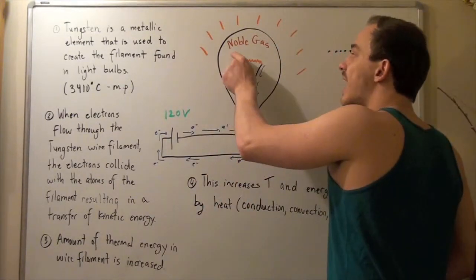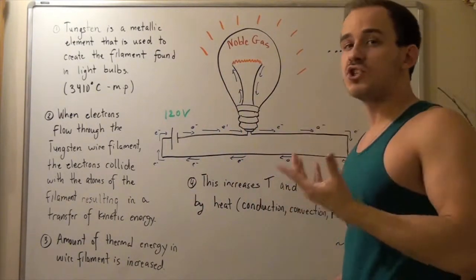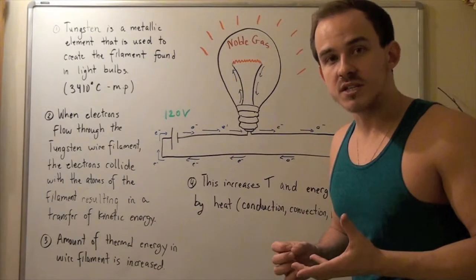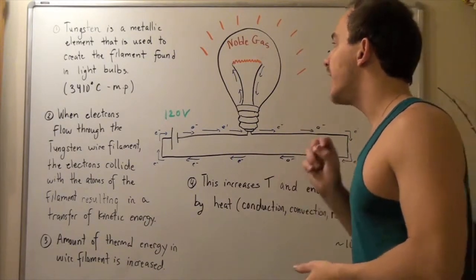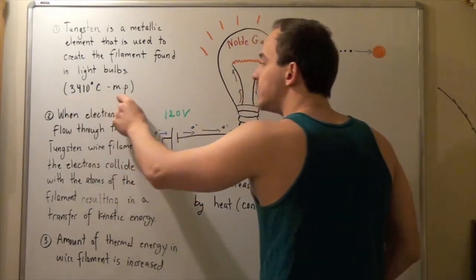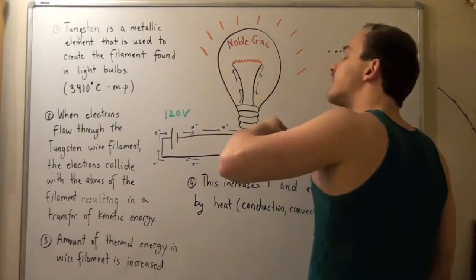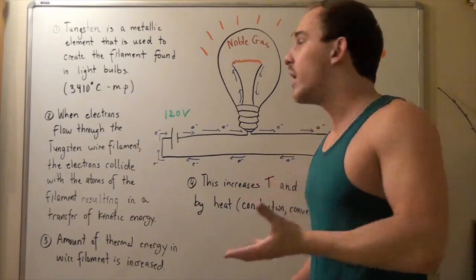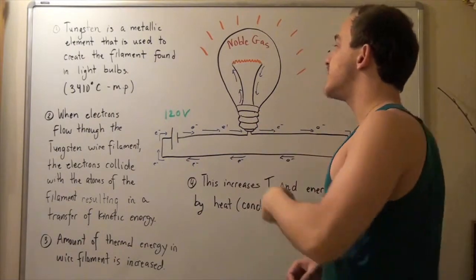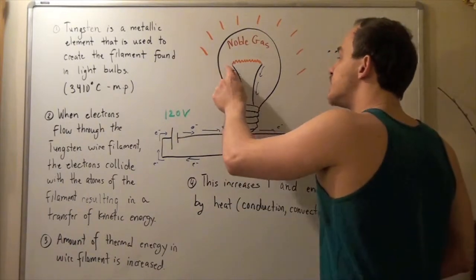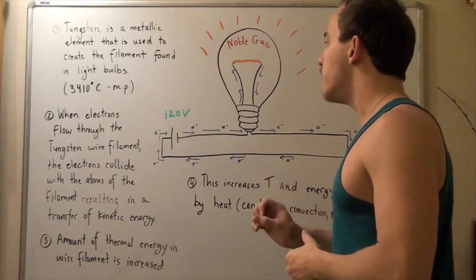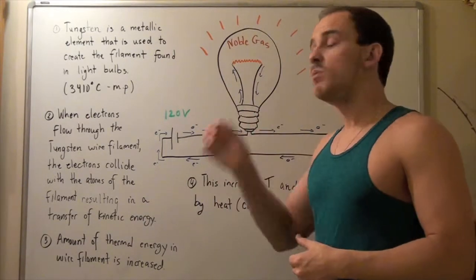As electrons flow through this wire filament, our temperature increases. That's exactly why we need to use a metallic filament with a relatively high melting point. If this filament had a low melting point, as soon as it heated up it would burst and break. That means electrons can no longer flow through this filament, our bulb will not glow — and that's actually what happens when a light bulb burns out.